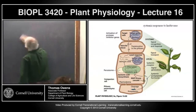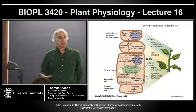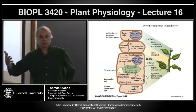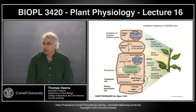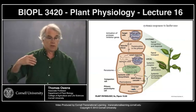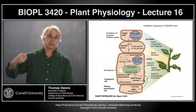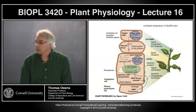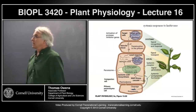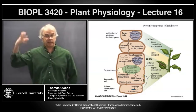We discussed the two roles that jasmonic acid plays in responses to herbivory. One is the local response, where elicitors — molecules specifically associated with insects, mammals, or pathogens — are signaling molecules that start a sequence of events. In the case of local responses, compounds present in the saliva of eating insects trigger the production of jasmonic acid, which then triggers certain responses in the local cells.